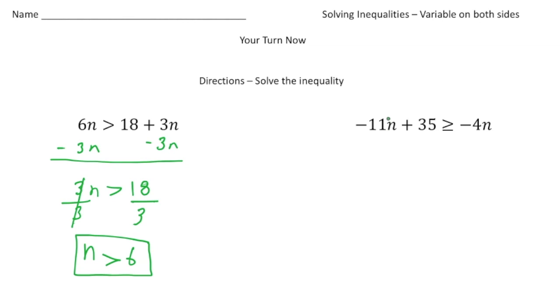Over here, I'm going to go by the same premise. I'm going to add 11n to both sides. When I do that, I have 35 left on the left-hand side, which is greater than or equal to, well, negative 4 plus 11 is 7n. Then divide both sides by 7, and n is going to be less than or equal to 5. And there's the answer. How'd you do?